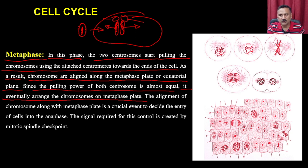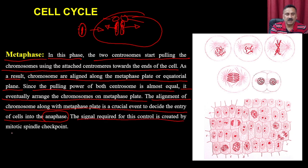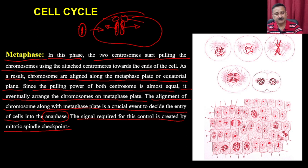The alignment of chromosomes along the metaphase plate is a crucial event to allow the cell to enter anaphase. The signal required for this control is created by the mitotic spindle checkpoints, which are controlled by cyclin-dependent cell cycle proteins.